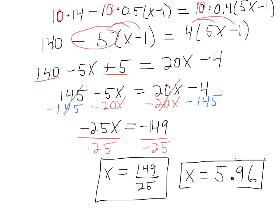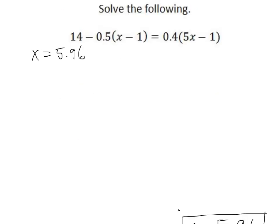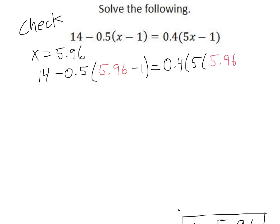To check this answer, you would plug 5.96 in for the x's and use your calculator. Let's take a look at the check. So we're going to check our initial equation, x equals 5.96, and we'd have 14 minus 0.5 times 5.96 minus 1 equals 0.4 times 5 times 5.96 minus 1. I'm going to work on the inside of the parentheses first.